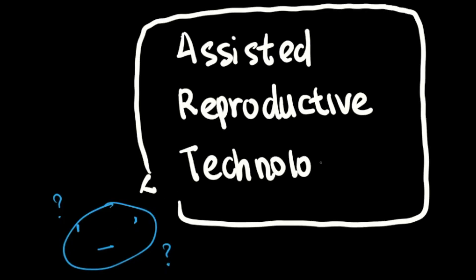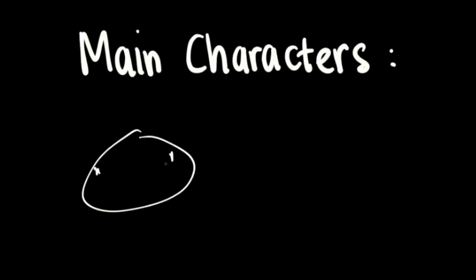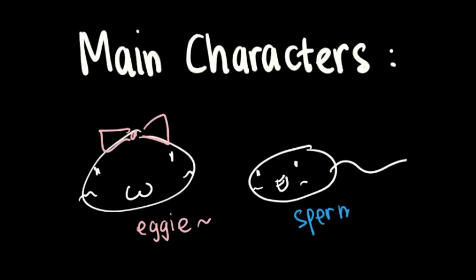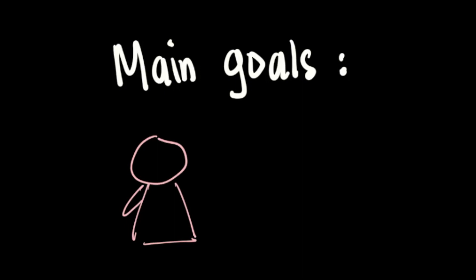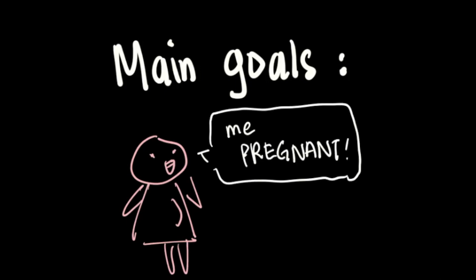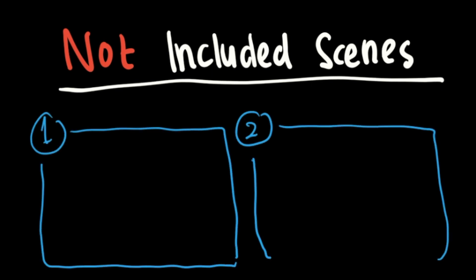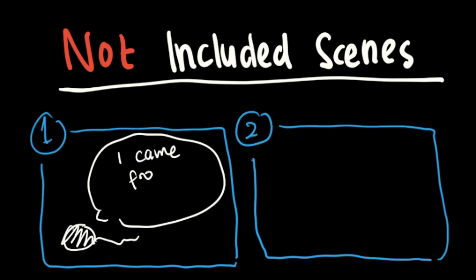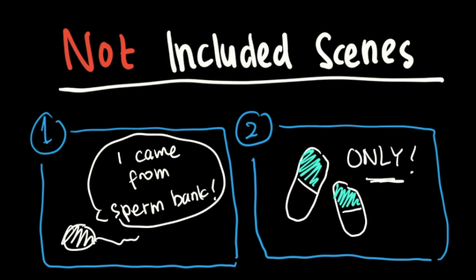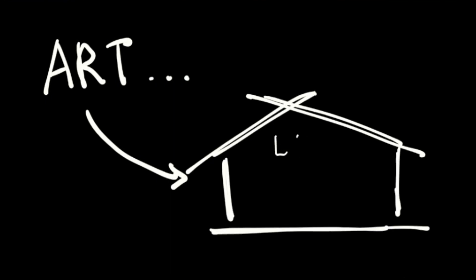ART procedures are medical procedures to address infertility. ART refers to the treatment of manipulating the gonads to increase the chance of pregnancy. In conclusion, the treatments that are considered as ART are the ones that have the sperm and egg handled in vitro.